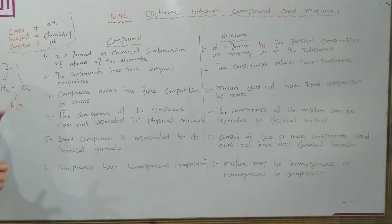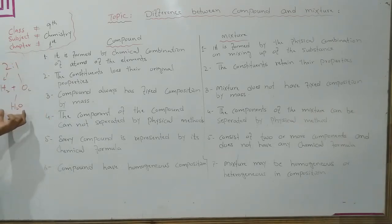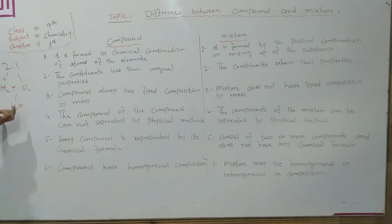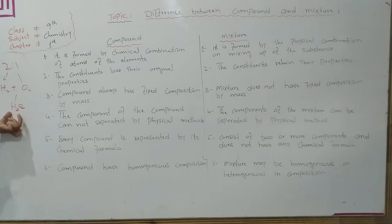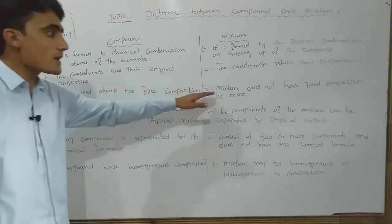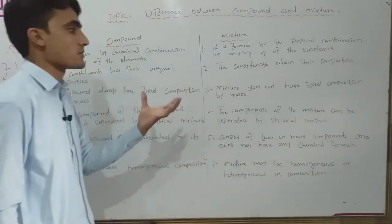If NaCl is always 1:1, then it is the compound. If you change the ratio, then you change the compound. If you add 2 hydrogen and oxygen you get water. If you change the ratio of the composition by mass, then you change the compound. Now the mixture does not have a fixed composition by mass.